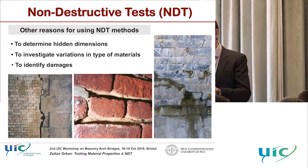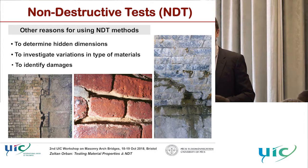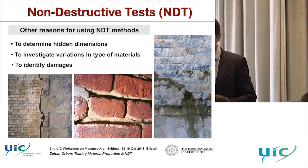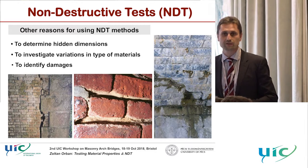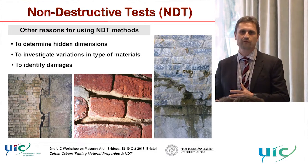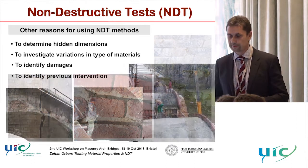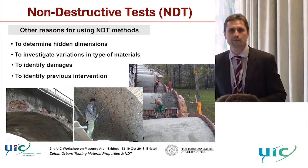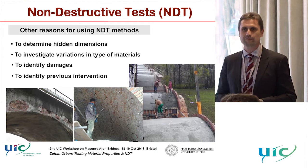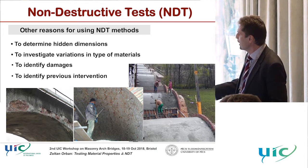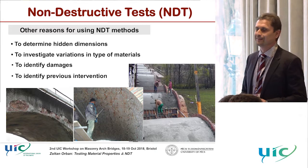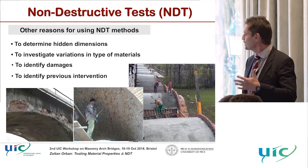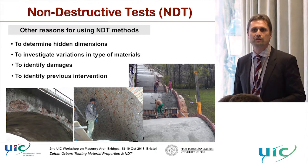Arches have damages that can affect arch behavior, but we need to know about them. Not all damages can be seen from the surface — many are hidden. There can also be previous interventions that we don't always have information about, for example a delaminated shotcrete layer. Sometimes we don't have enough information on the thickness of such previous interventions.